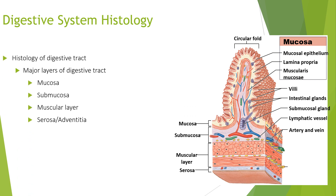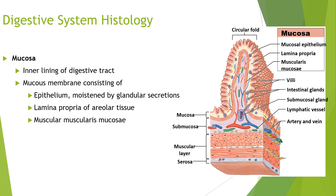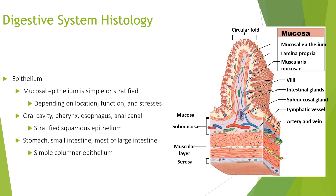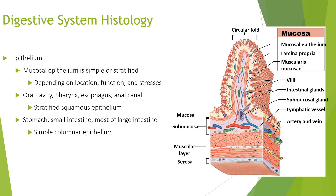Looking at the digestive system histology, you can see a diagram here. The major layers of the digestive tract are the mucosa, submucosa, muscular layer, and serosa/adventitia. The mucosa lines the digestive tract as a mucous membrane consisting of epithelium moistened by glandular secretions, the lamina propria of areolar tissue, and the muscularis mucosa. The mucosal epithelium can be simple or stratified depending on location, function, and mechanical stresses.